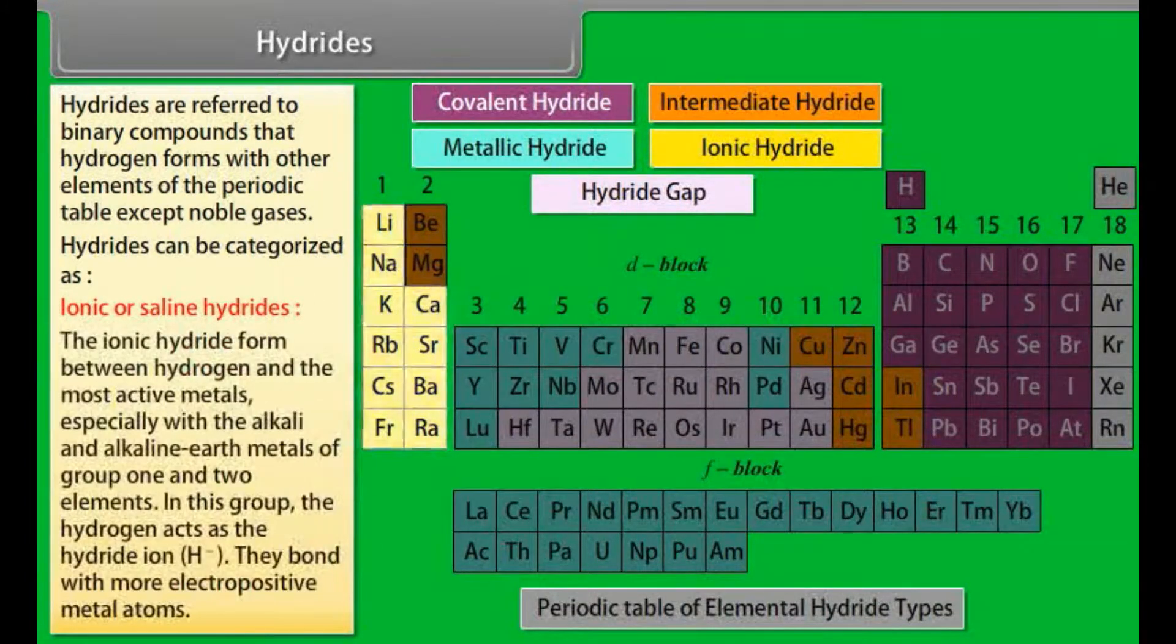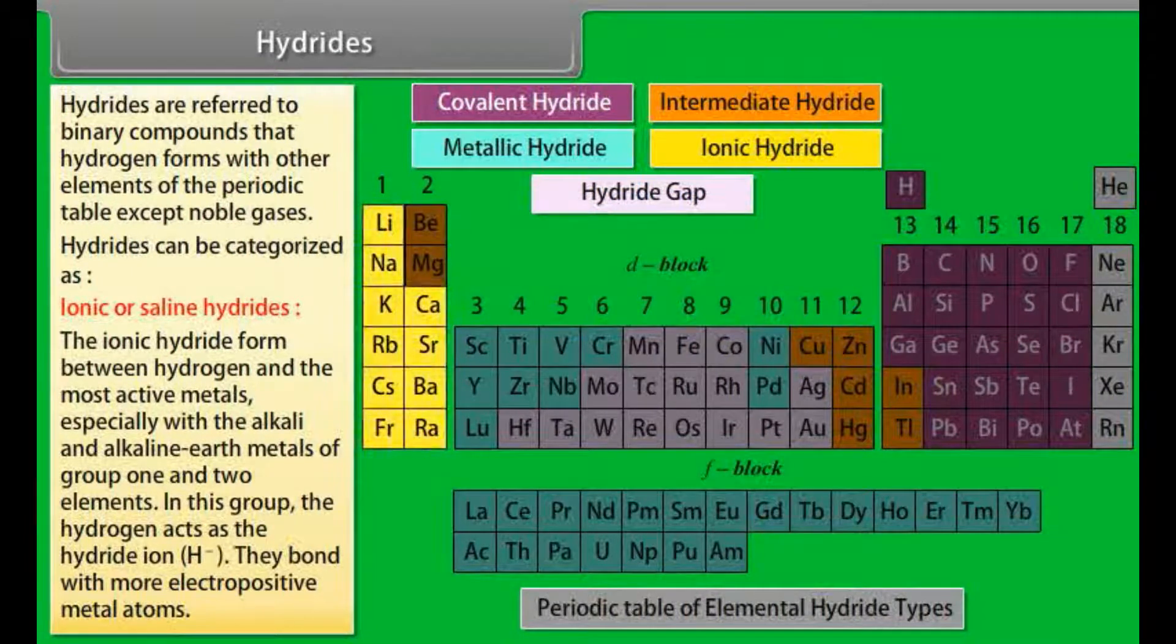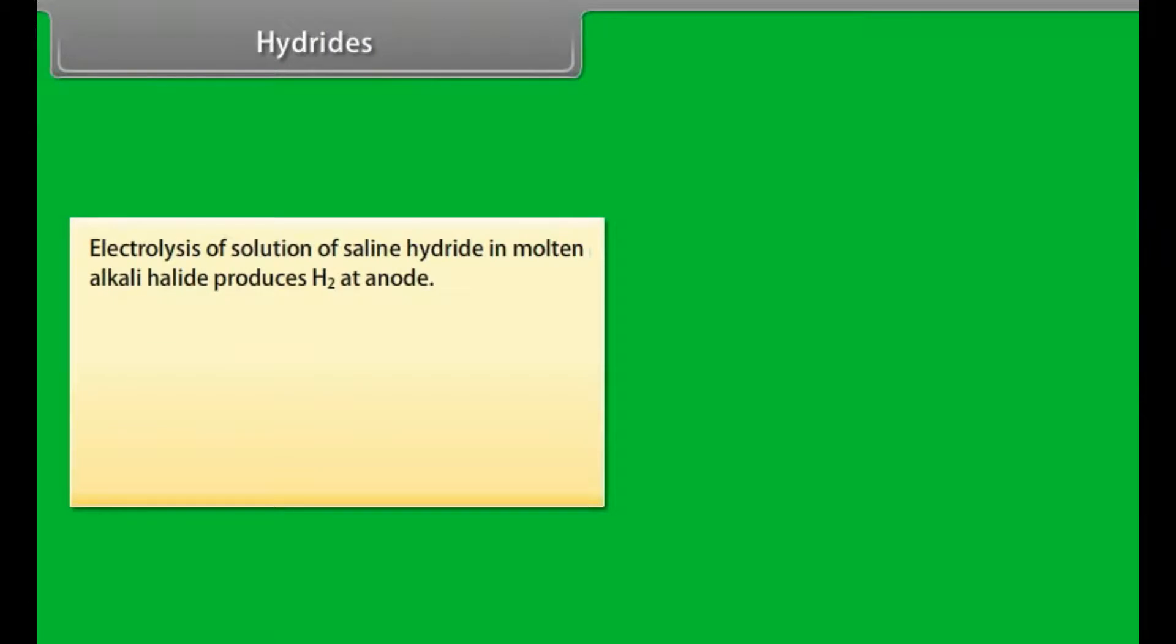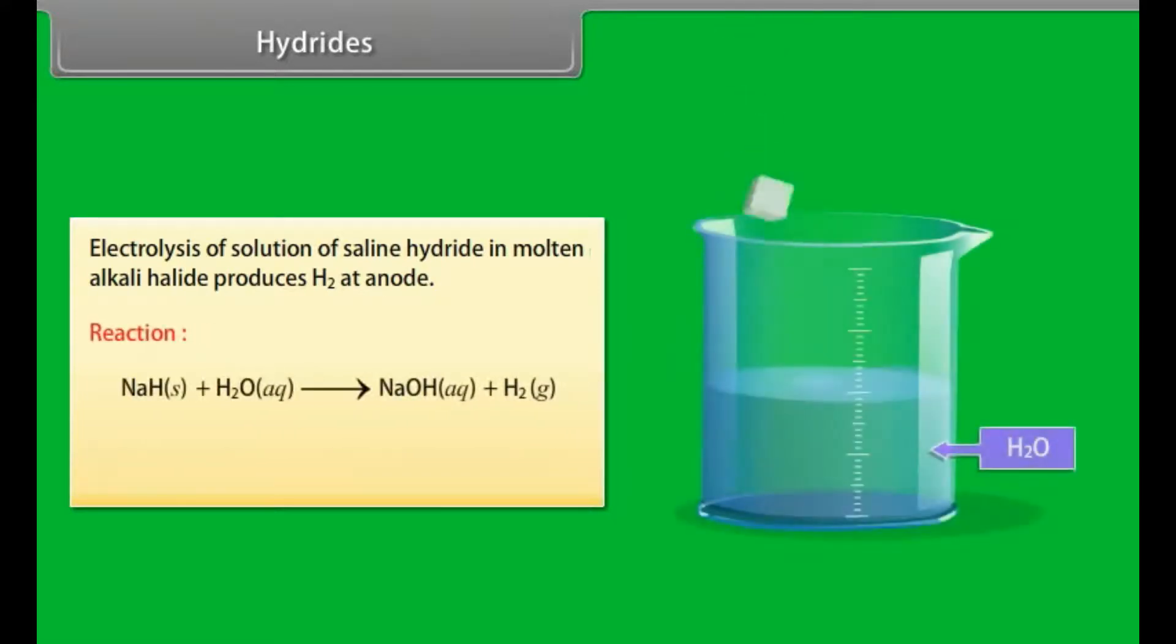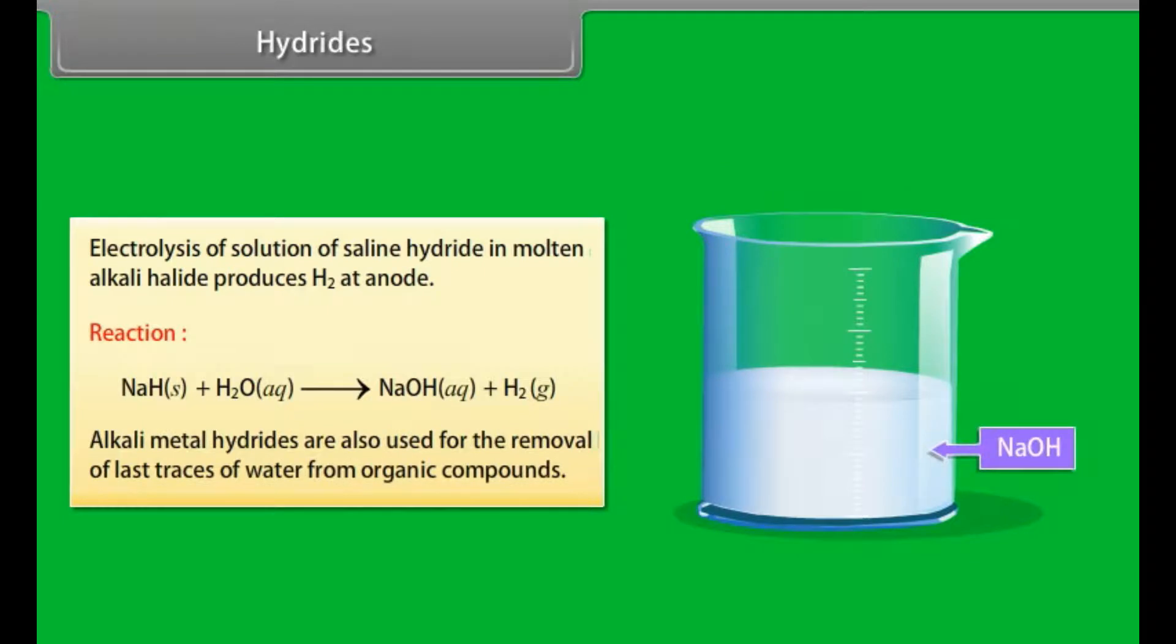Hydrides. Hydrides are referred to binary compounds that hydrogen forms with other elements of the periodic table except noble gases. Hydrides can be categorized as: Ionic or saline hydrides. The ionic hydride form between hydrogen and the most active metals, especially with the alkali and alkaline earth metals of group 1 and 2 elements. In this group, the hydrogen acts as the hydride ion. They bond with more electropositive metal atoms. Electrolysis of solution of saline hydride in molten alkali halide produces H2 at anode. Alkali metal hydrides are also used for the removal of last traces of water from organic compounds.